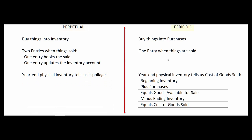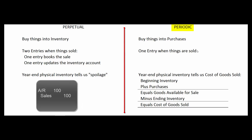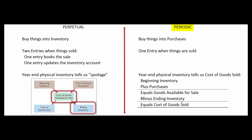In the periodic inventory system, we buy things in an account called purchases and we don't update the inventory count when things are sold. We just book the sale. Then we wait to the end of the year. We take a physical inventory. We take our beginning inventory plus our purchases — that gives us our total goods available for sale. We subtract what was left on hand and that must give us our cost of goods sold.